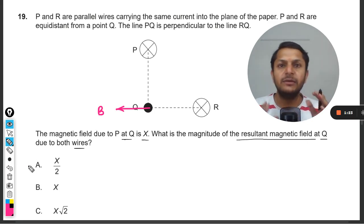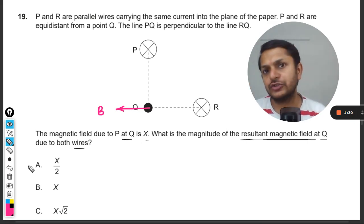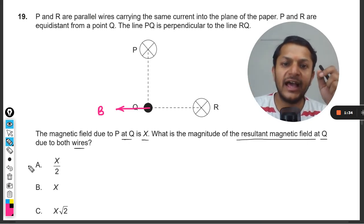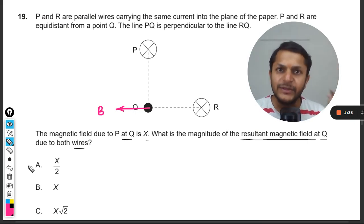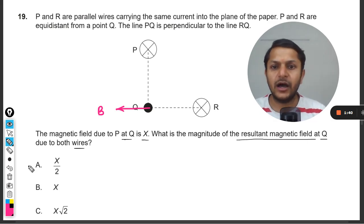But the magnetic field, as you can already see, will be of the same strength because the wires are carrying the same current and the distance is also same. So the magnetic field intensity because of P as well as because of R will be same, but the direction will be different. And in the case of R it will be in the upward direction.